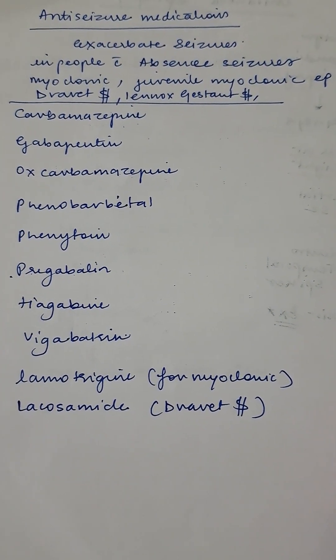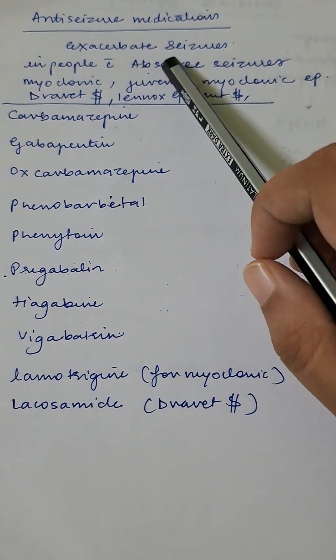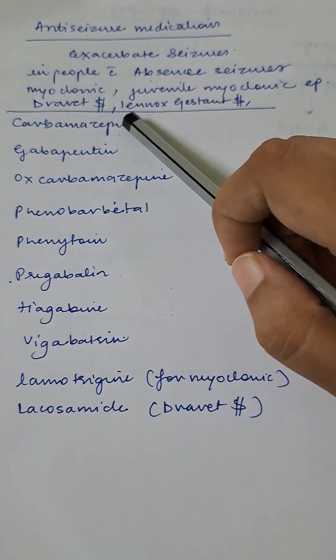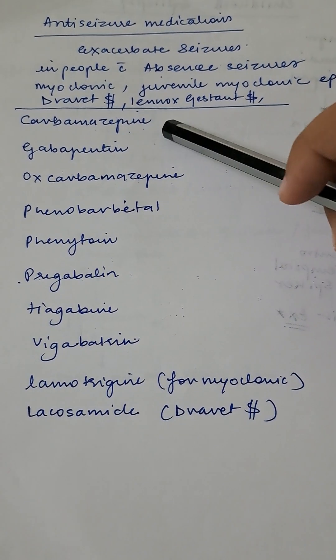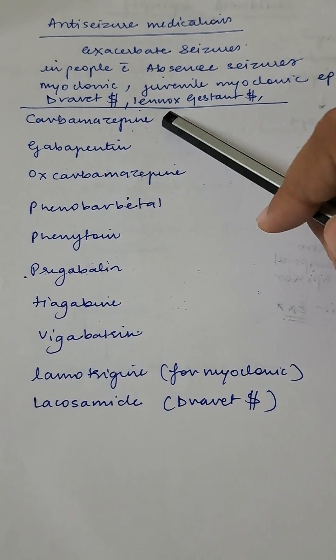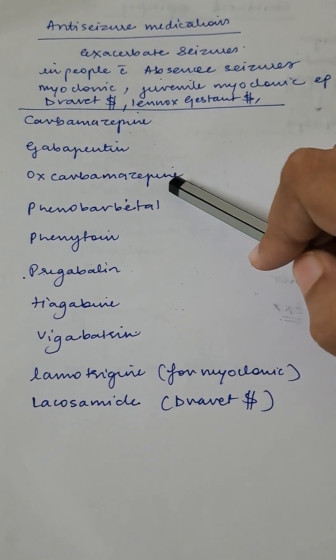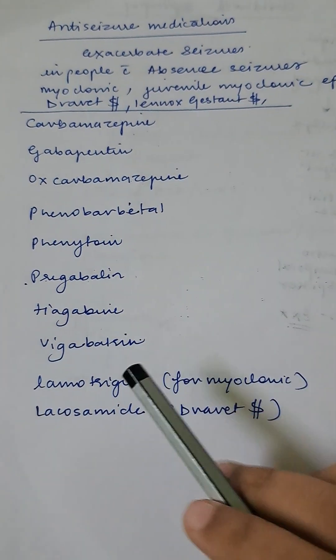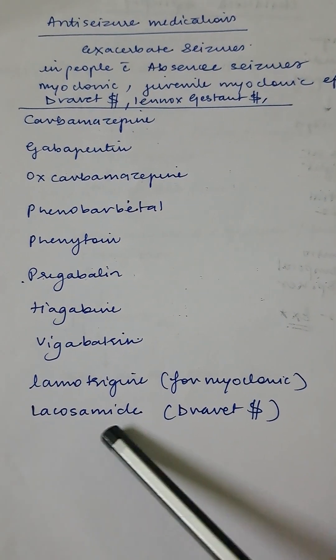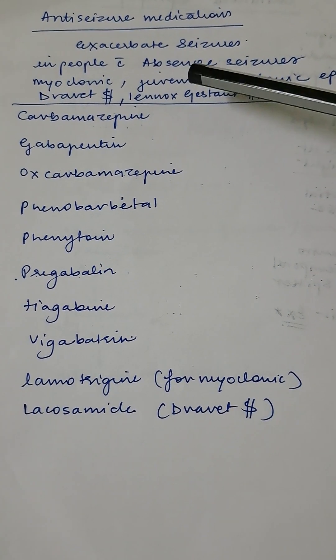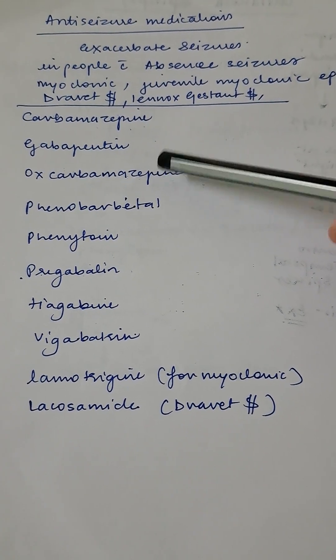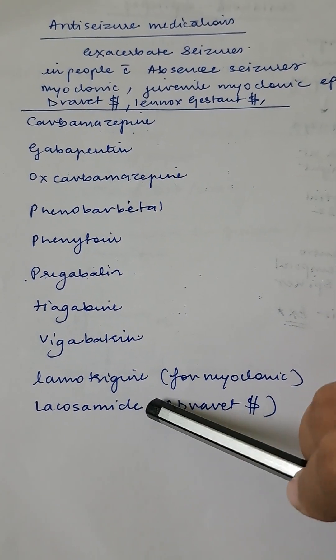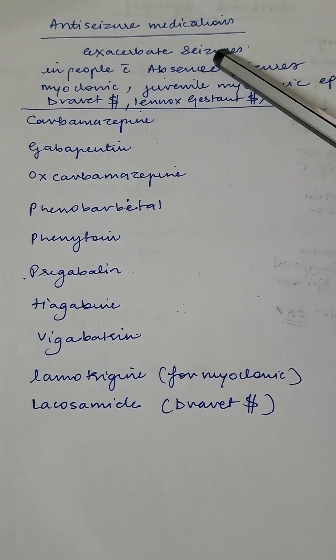Anti-seizure medications which can exacerbate seizures in people with absence seizure, myoclonic seizure, juvenile myoclonic epilepsy, especially pediatric seizures like Dravet syndrome or Lennox-Gastaut syndrome: carbamazepine is important, it is asked in all exams; gabapentin, oxcarbazepine, phenobarbital; in case of myoclonic, lacosamide for Dravet syndrome. I'll just repeat this list: carbamazepine, gabapentin, oxcarbazepine, phenobarbital, phenytoin, pregabalin, tiagabine, vigabatrin, lamotrigine, and lacosamide. These are the anti-seizure medications which will exacerbate the following seizures.